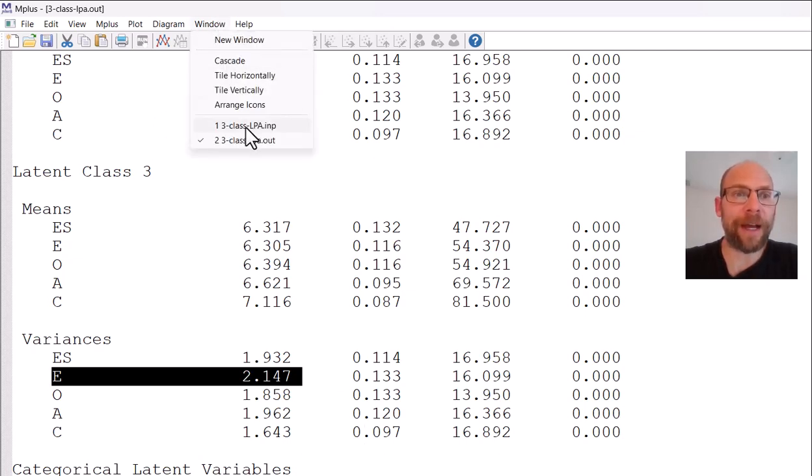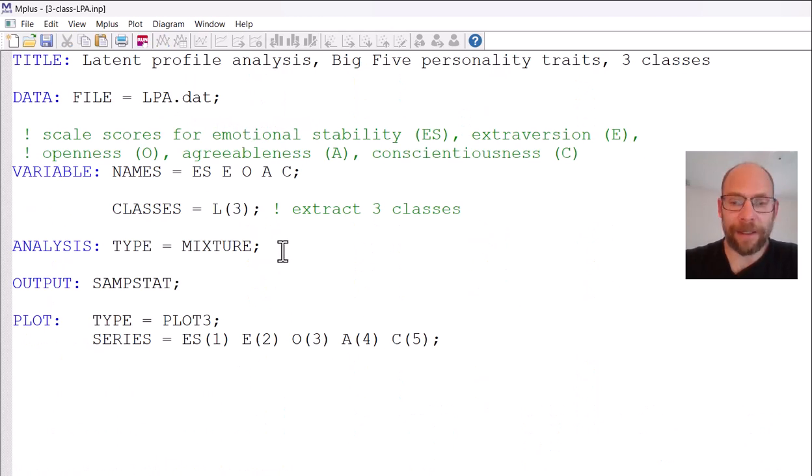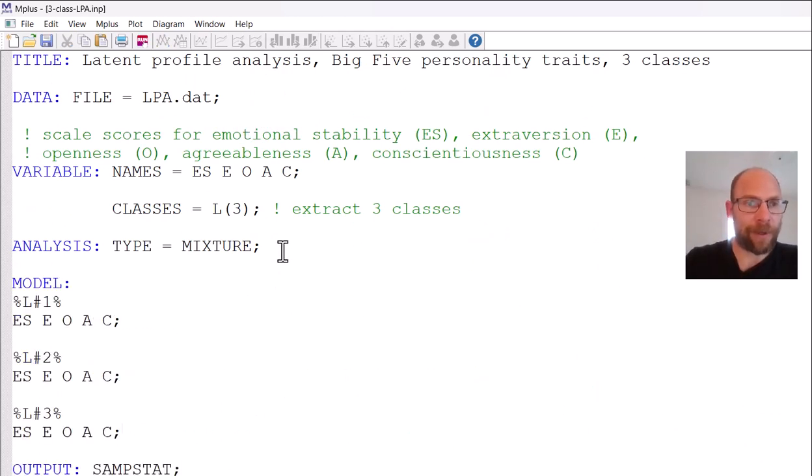We can go to our input file and we can add a model statement. For simplicity, I already prepared that model statement, so I can just paste it in here. This model statement now includes class specific statements, which you don't need if you go with the M plus defaults, where the means can differ and the variances cannot differ. But if you want to change the variances to be freely estimated in each class, then you need a class specific statement for each class in which the variances are listed.